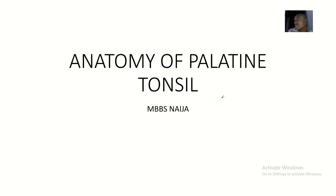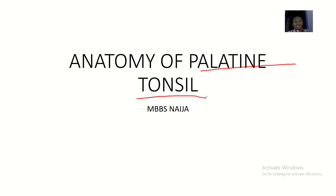Welcome to this tutorial. Previously we spoke about Waldeyer's ring, where we spoke about the components of Waldeyer's ring, and if you can remember, the palatine tonsil was a component of Waldeyer's ring. So we're picking out the palatine tonsil to talk about its anatomy, because the palatine tonsil is important. When we are done talking about the anatomy, applied anatomy, blood supply, and nervous supply of the palatine tonsil, you should see that it is a small but important structure.